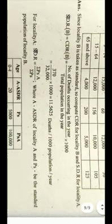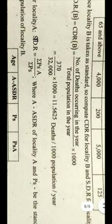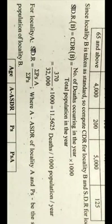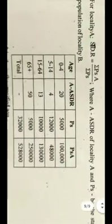CDR for Locality B (standard population): Total deaths = 90 + 50 + 105 + 125 = 370. Total population = 5,000 + 12,000 + 10,000 + 5,000 = 32,000. CDR = 370 / 32,000 × 1,000 = 11.5625 deaths per 1,000 population per year. For Locality A, we calculate ASDR: (120 / 6,000) × 1,000 = 20; second value = 4; third = 13; fourth = 50.